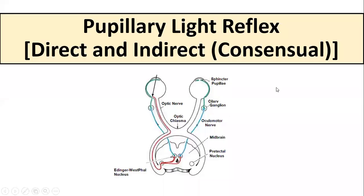Hi everyone. In this video we will talk about the pupillary light reflex, which has two components: the direct light reflex and the indirect or consensual light reflex. When light is directed into the eye, the pupil undergoes a change in size reflexly to improve the depth of focus. Clinically, the light reflex is elicited by shining a torch light into the eye while a patient is seated in a dark room, and the pupillary responses are recorded.